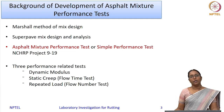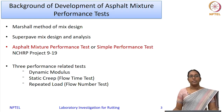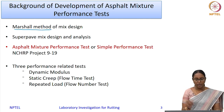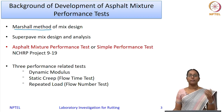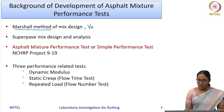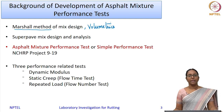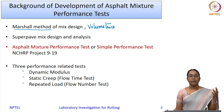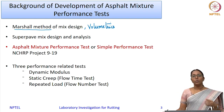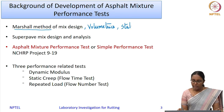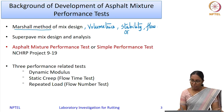Let me give an overview of the background for the development of asphalt mixture performance tests. As we all know, we design bituminous mixtures in India and many other countries following the Marshall method of mix design. The basic concept is that you select aggregates and binder for a particular mixture—say bituminous concrete or bituminous macadam—and then look at the volumetrics: voids in mineral aggregate, voids filled with bitumen, and voids in the mixture. These parameters are evaluated after casting specimens with different binder contents using the Marshall compactor. Then you determine stability and flow to find the optimum binder content.